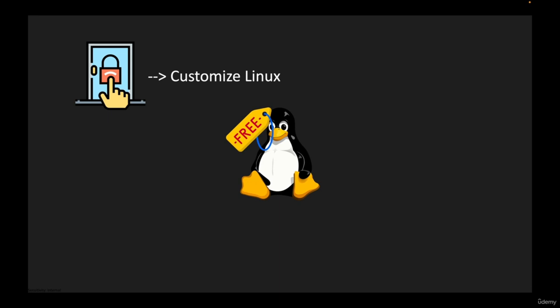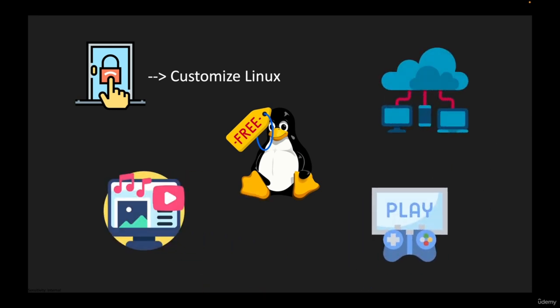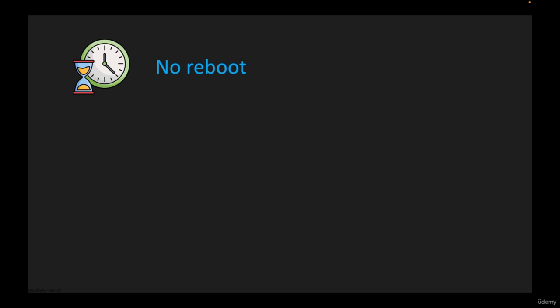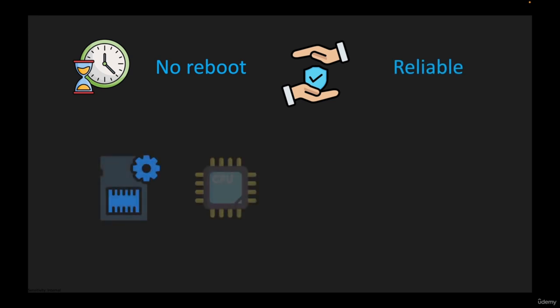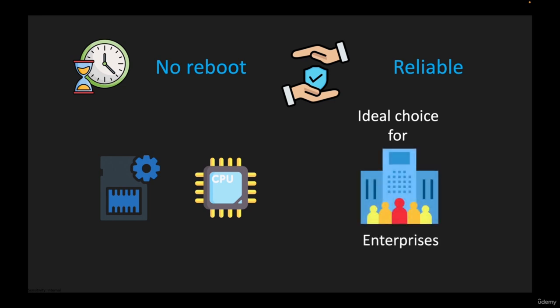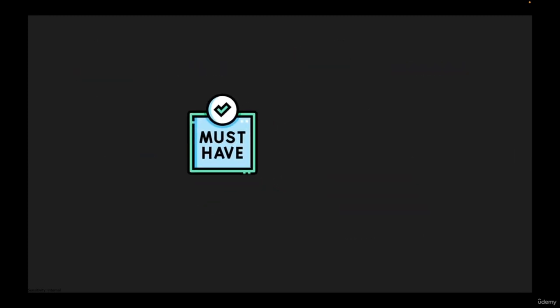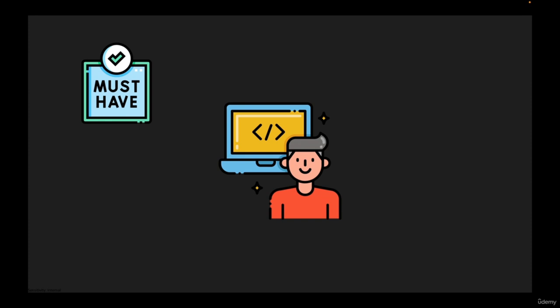This has led to the development of many specialized versions of Linux for different purposes, such as scientific computing, multimedia production, and gaming. Linux can generally run for much longer periods without needing a reboot compared to Windows, because it is designed to be a highly stable and reliable operating system with robust memory management and process handling. This makes it an ideal choice for servers and other mission-critical systems requiring high uptime. Learning Linux is essential for anyone entering the IT world, since many of the world's servers, supercomputers, and embedded devices run on Linux.